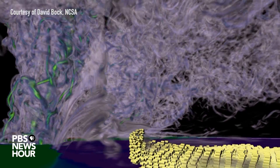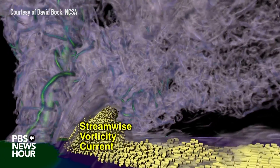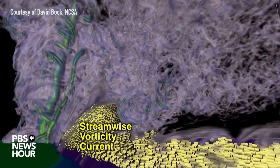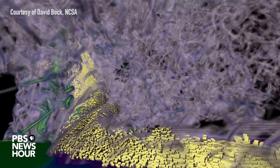This highlights the streamwise vorticity current, which is a feature we've identified in these simulations that seems to be important to maintaining the strength of the storm and therefore the tornado.